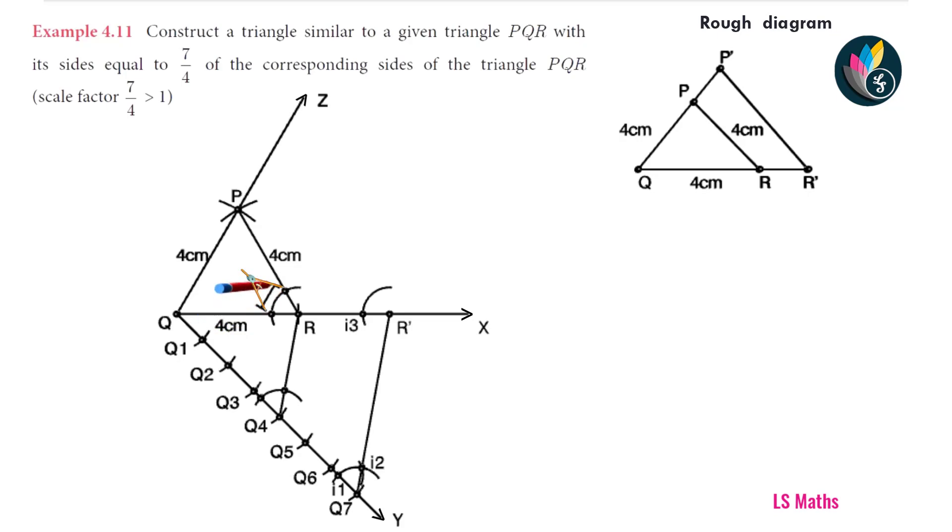With this distance as radius, draw an arc at I3. Now, draw a line joining R dash and I4. It meets the extension of QP at one point. Mark this point as P dash. Now, P dash Q R dash is the required triangle.